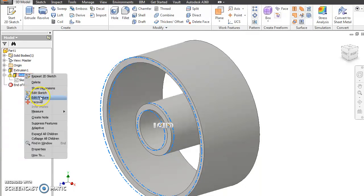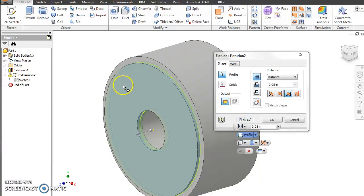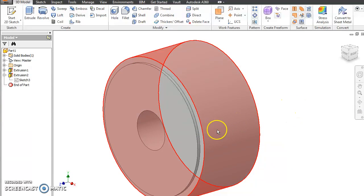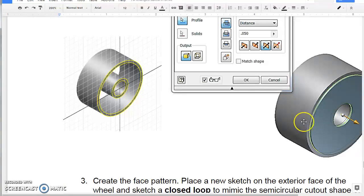What it needs you to do is redefine what your selection was, what part that you were extruding. So go ahead, right-click, Edit Feature. And then all you're going to do is select inside your two sketches again. Hit OK. And then now you have a part that looks like this part.